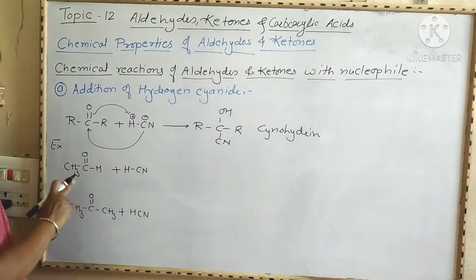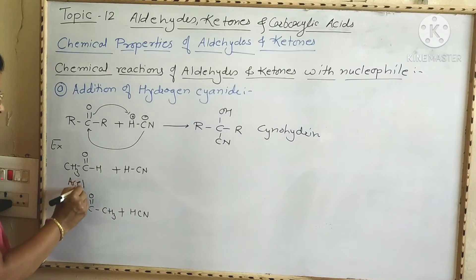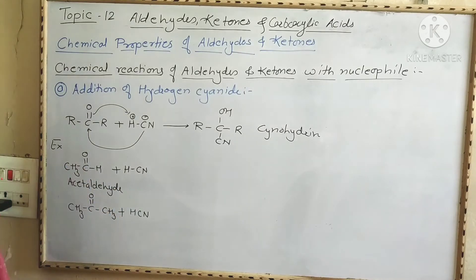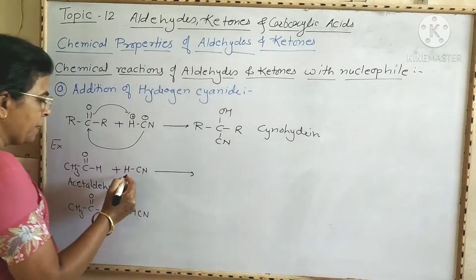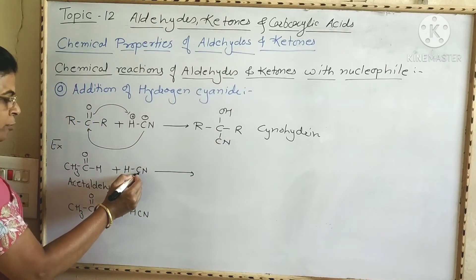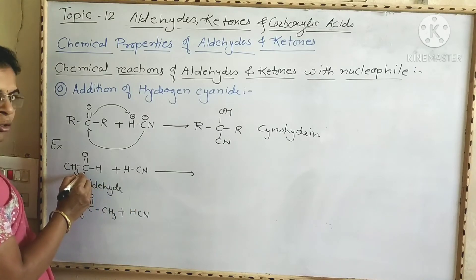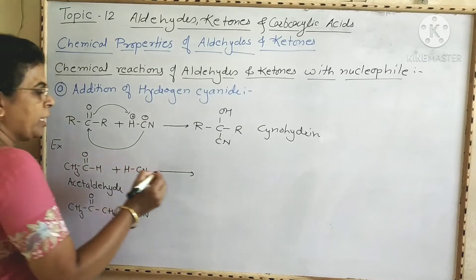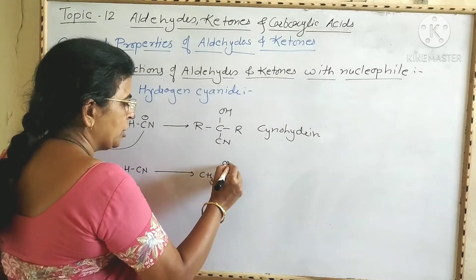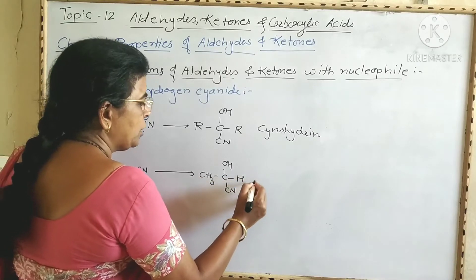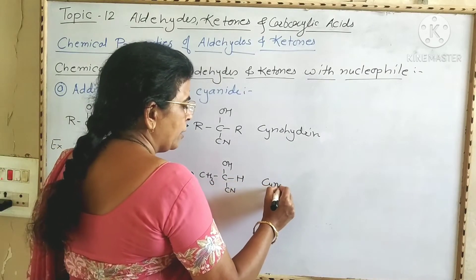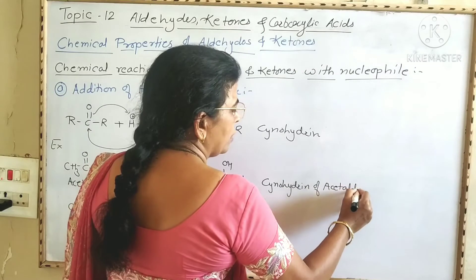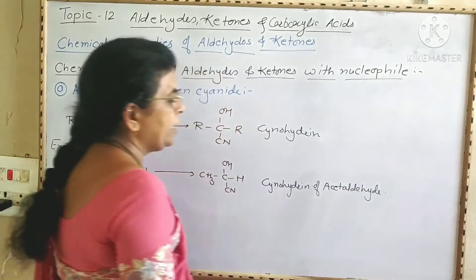Now we are going to see an example. This is acetaldehyde, also called ethanal — it has two carbon atoms. When this compound is treated with HCN, the CN⁻, which is negatively charged, gets attached to the electropositive carbonyl carbon. Then the pi electrons shift onto oxygen and this oxygen gets attached to the hydrogen atom, to form CH₃-C(OH)(CN)-H. This is the cyanohydrin of acetaldehyde, also named acetaldehyde cyanohydrin.